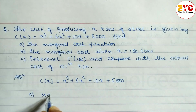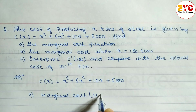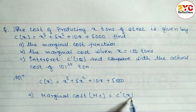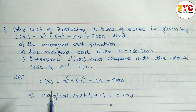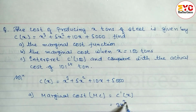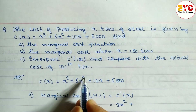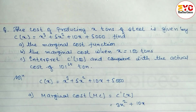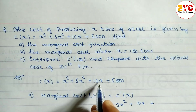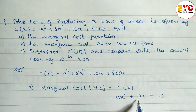Marginal cost MC is equal to the derivative of the cost function. Taking the derivative: x cubed gives 3x squared; 5x squared gives 5 into 2, which is 10x; 10x gives 10; and 5,000 gives 0. So the marginal cost function is 3x squared plus 10x plus 10.